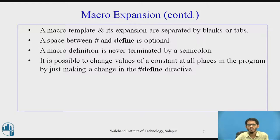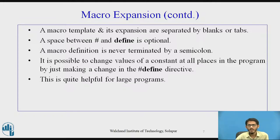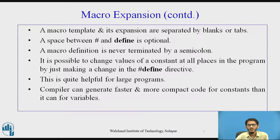Where the macro has been defined, if you want to change the value of that macro, change it at the point where it has been defined. This has an advantage over a variable, where you would need to go to every place and change that value. For large programs where a particular value is used at multiple places, just changing the macro definition does the work. Additionally, the compiler can generate faster and more compact code for constants than it can for variables.